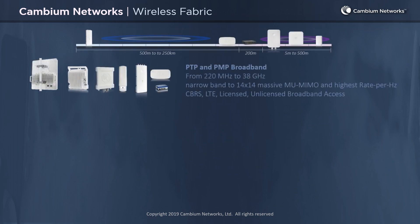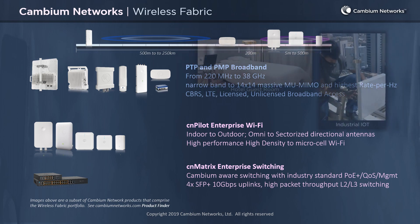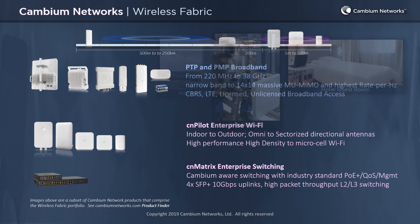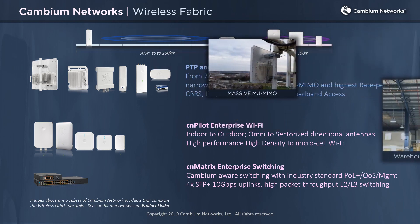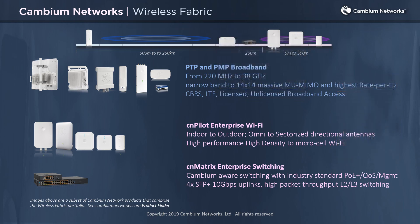Only Cambium Networks delivers a full wireless fabric from 250 kilometers to 5 meters, from microcell to long range, purposely engineered for diverse markets from industrial IoT to a hotel guest room, from a logistics warehouse to high-capacity outdoor wireless broadband. Recently, Cambium introduced a line of Ethernet switches to complement the wireless fabric. The CNMatrix Enterprise switches are Cambium access point aware and integrate seamlessly into the wireless fabric.